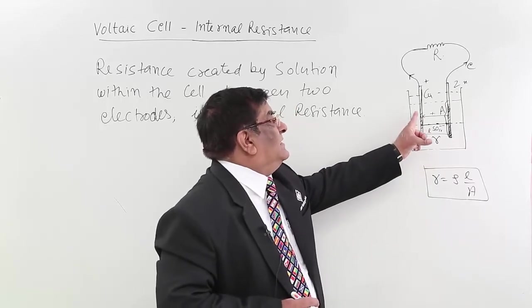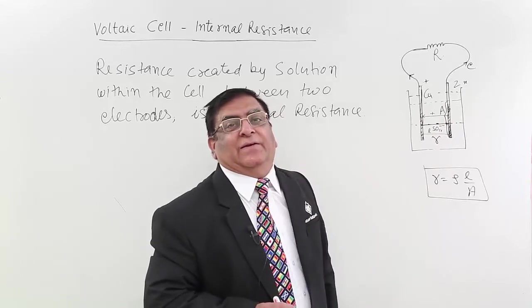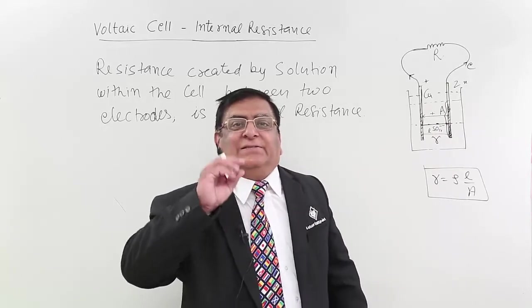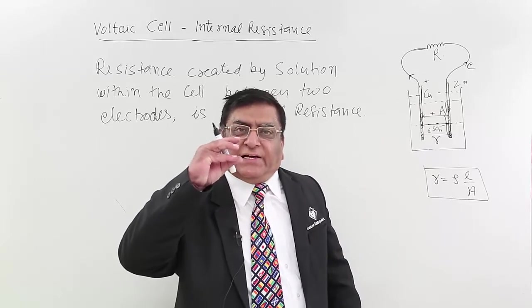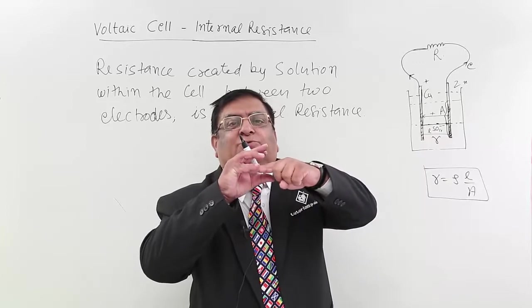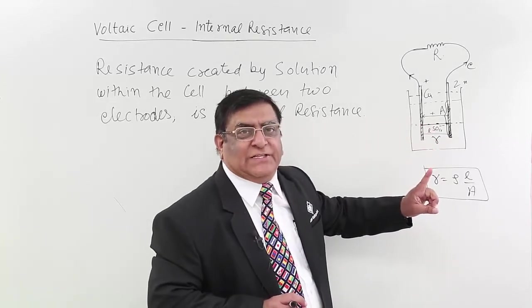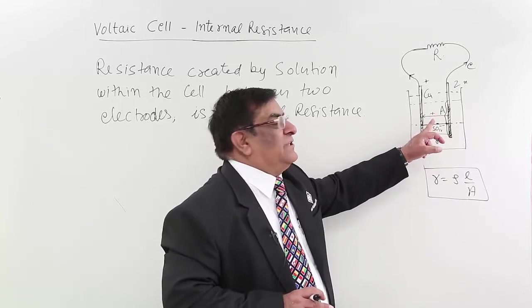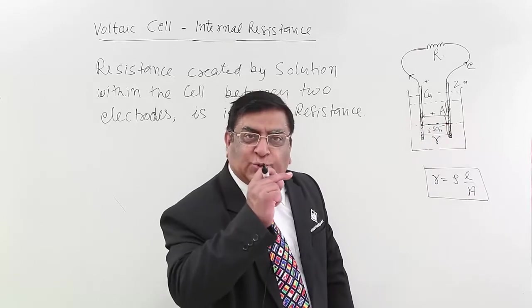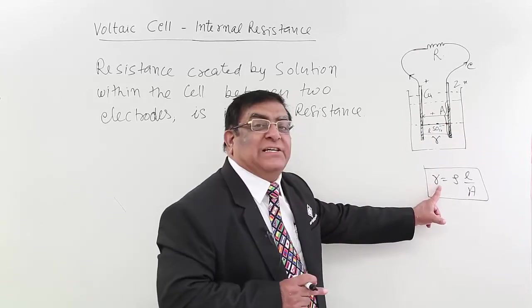If we raise the temperature, then this electrolyte becomes thin. If this becomes thin, then the resistance becomes less. If it is very thick, it is difficult to pass. If it is thin, it is very easy to pass for the ions. So with the increase of temperature, this becomes thin, it is easier for ions to pass through. They pass through more and more. The resistance has decreased.